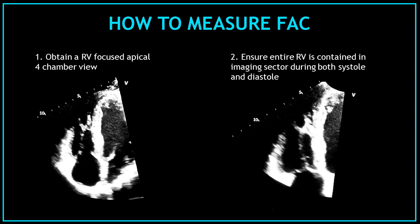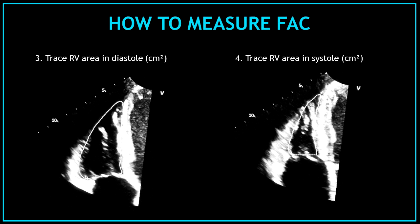How to measure the fractional area change: First, obtain a right ventricular focus apical four-chamber view. Second, always ensure the entire right ventricular area is contained in the imaging sector during both systole and diastole. Third, trace the right ventricular area in diastole. And fourth, trace the right ventricular area in systole.